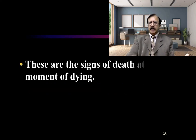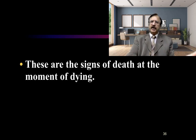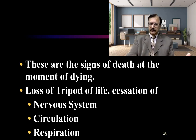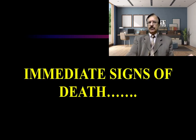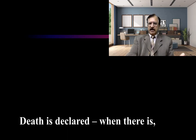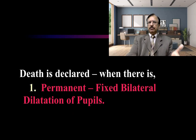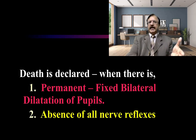The immediate changes are basically the signs of death which appear at the moment of dying — that means loss of life: cessation of the nervous system, cessation of circulation, and cessation of respiration. The immediate signs of death include permanent fixed dilated pupils and absence of all nerve reflexes.